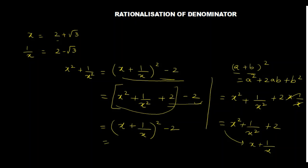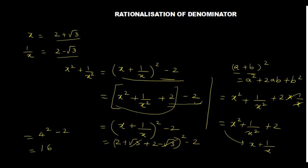So the value of x plus 1 by x is: x is 2 plus root 3 and 1 by x is 2 minus root 3, so 2 plus root 3 plus 2 minus root 3 — the 2 with 2 becomes 4, and root 3 cancels with root 3. So x plus 1 by x equals 4. Therefore x square plus 1 by x square equals 4 squared minus 2, which gives 16 minus 2 equals 14. So you get the answer 14, and this is the pattern you need to use in future sums.